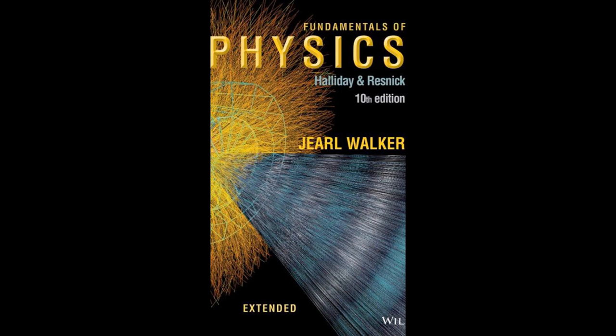Potential energy is a fundamental concept in physics, representing the energy an object possesses due to its position or configuration relative to other objects. It exists in various forms, such as gravitational potential energy, elastic potential energy, and chemical potential energy. Gravitational potential energy arises from an object's position above the Earth's surface — the higher the object is lifted, the more potential energy it gains. This energy can be converted into kinetic energy when the object falls. Elastic potential energy is stored in objects like springs and rubber bands when they are stretched or compressed; when released, this energy is converted into kinetic energy. Chemical potential energy is present in substances due to the arrangement of their atoms and molecules, and when chemical reactions occur, this energy can be released or absorbed.